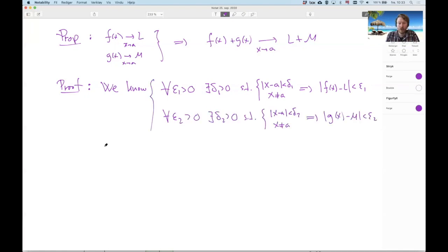And what do we want to show? We want to show for every epsilon there exists a delta such that when I make this thing here delta small but not A, this implies that f of x plus g of x minus L minus M is less than epsilon.